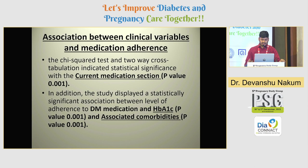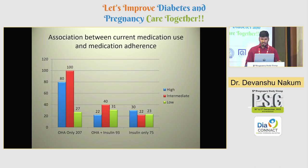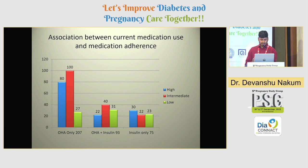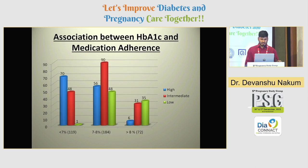Regarding the association between clinical variables and adherence, current medication, HbA1c levels, and associated comorbidities were the three parameters significantly associated with adherence levels. Of the 375 patients, 207 were on oral hypoglycemic agents (OHA) only, 93 were on OHA with insulin, and 75 were on insulin only. Patients on OHA showed high to intermediate adherence levels, while those on OHA with insulin shifted more toward intermediate adherence, and those on insulin only showed higher adherence levels.